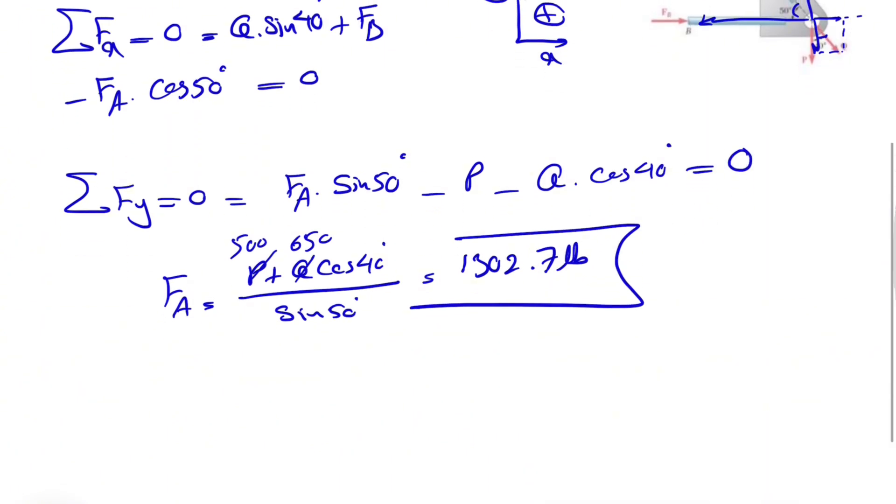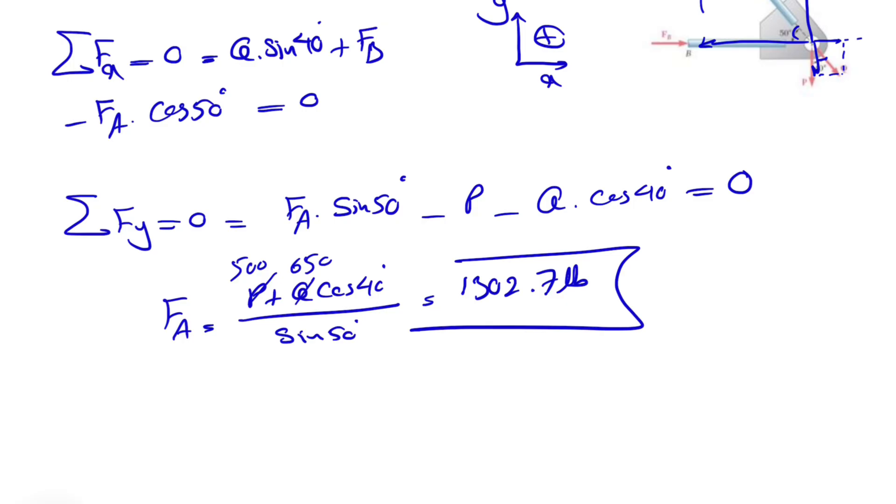So we found one of the unknowns. If we just plug this into the previous equation, we should be able to find the FB as well.